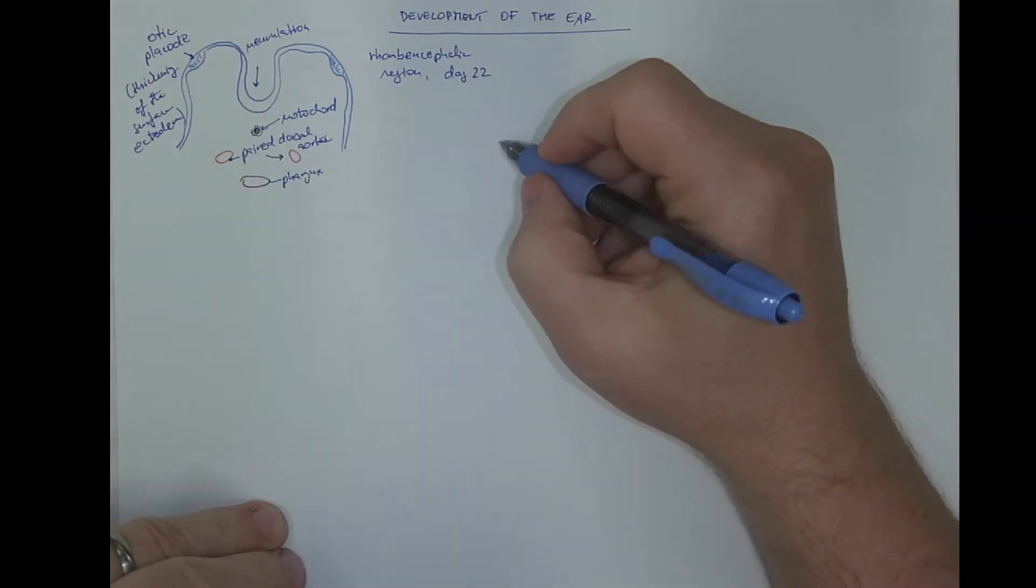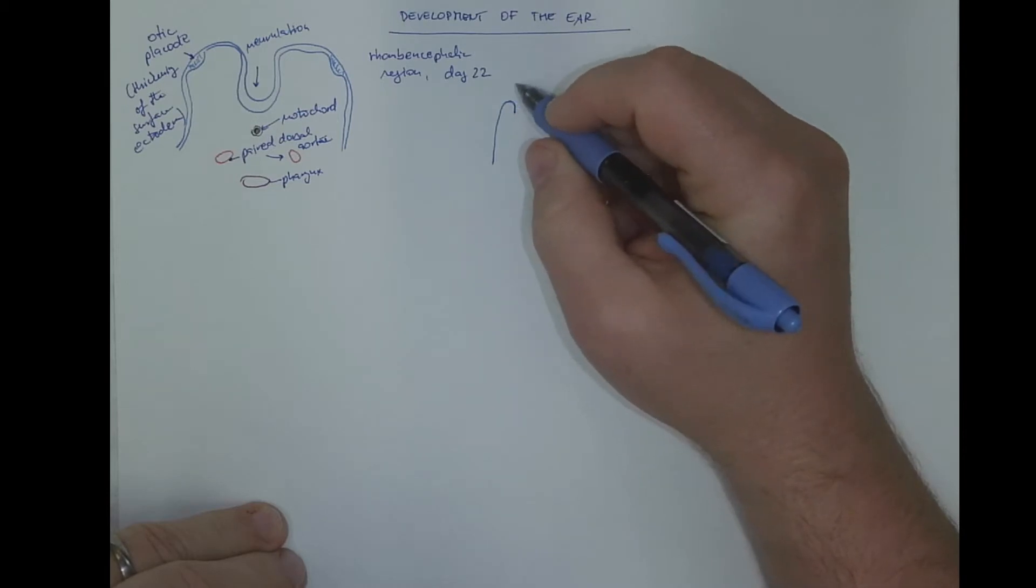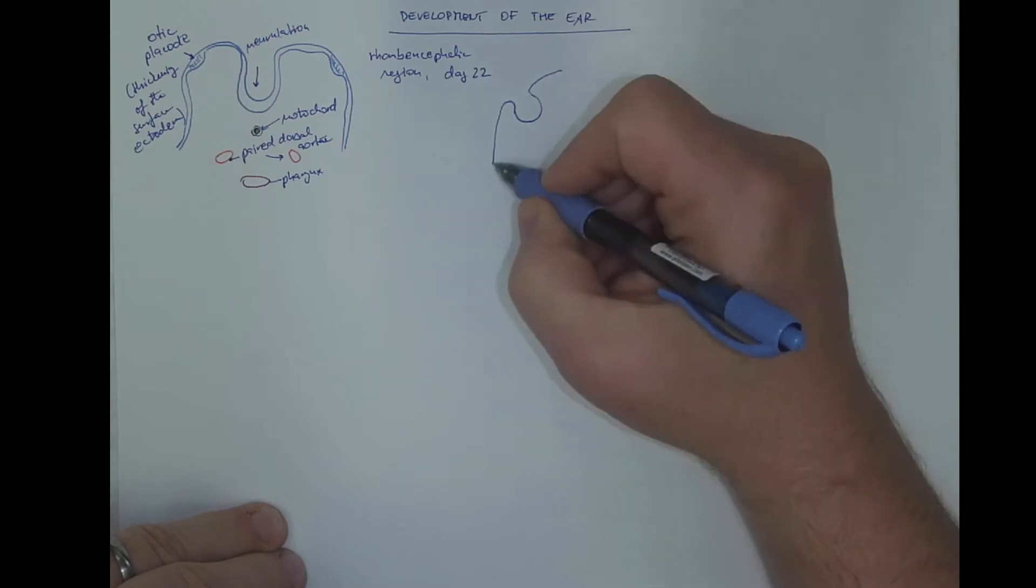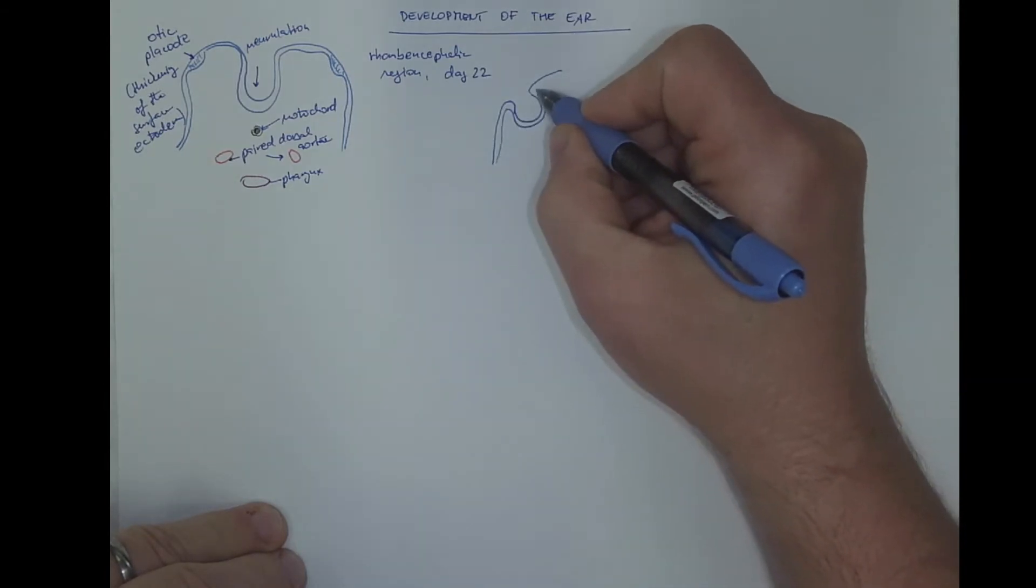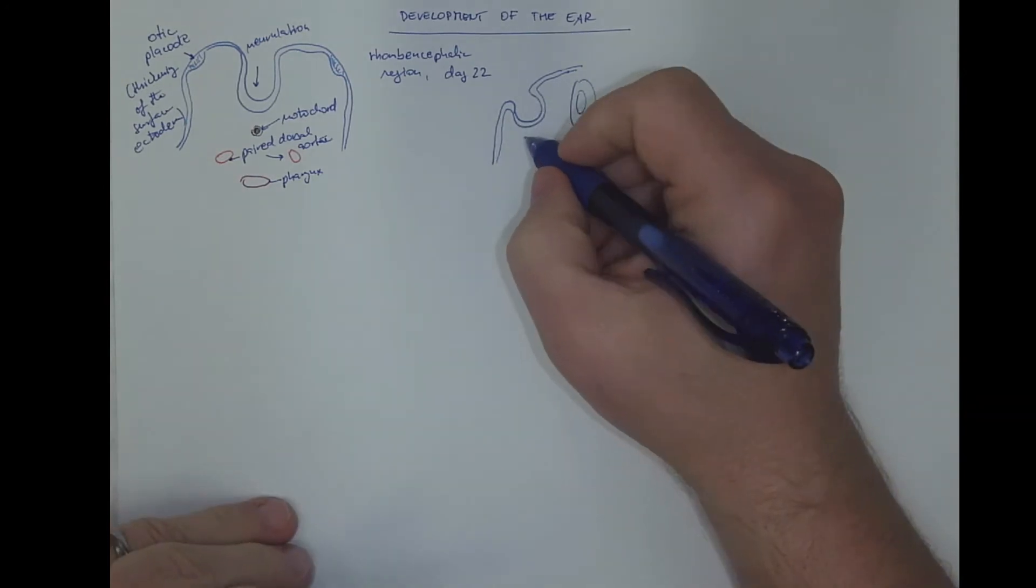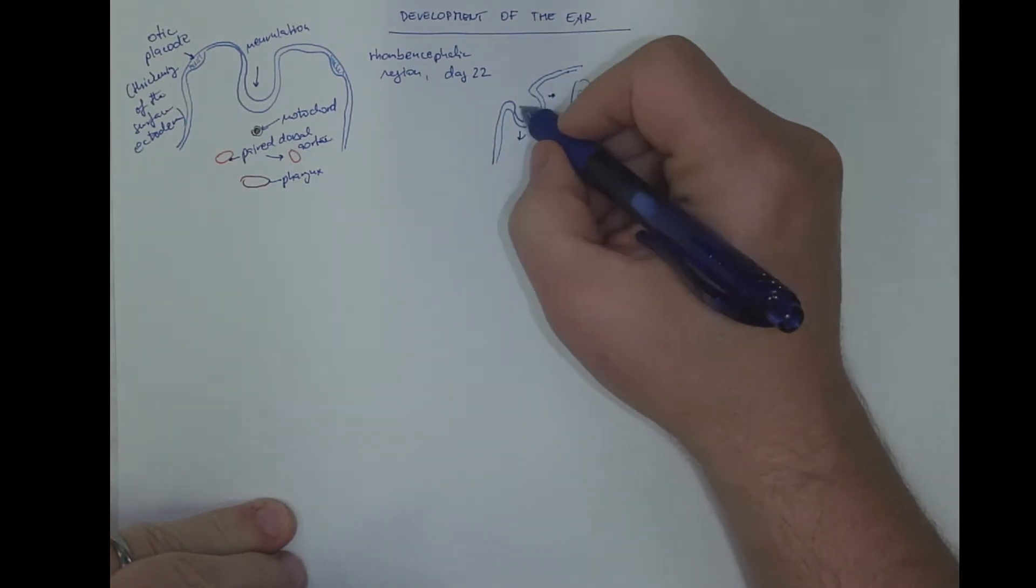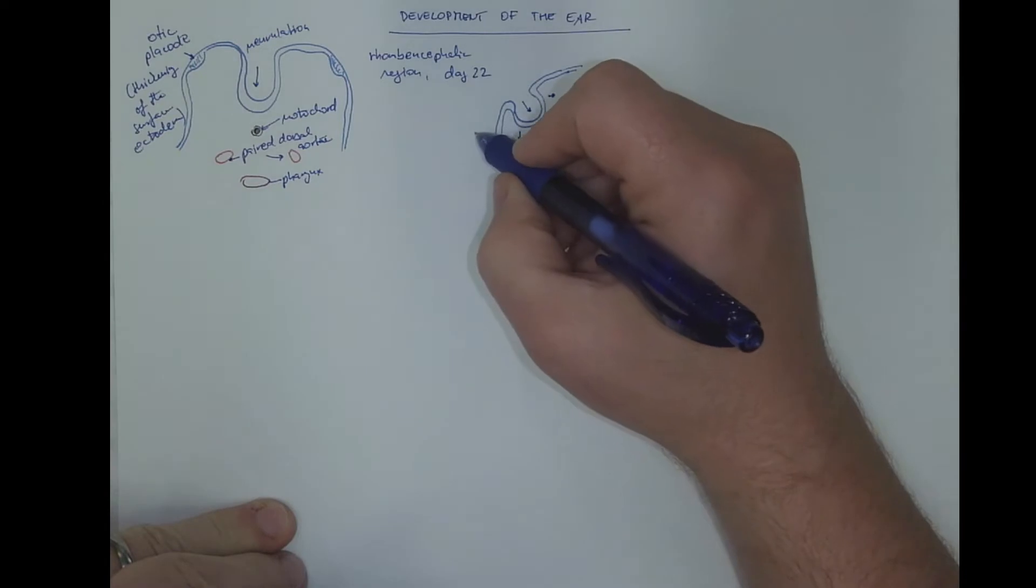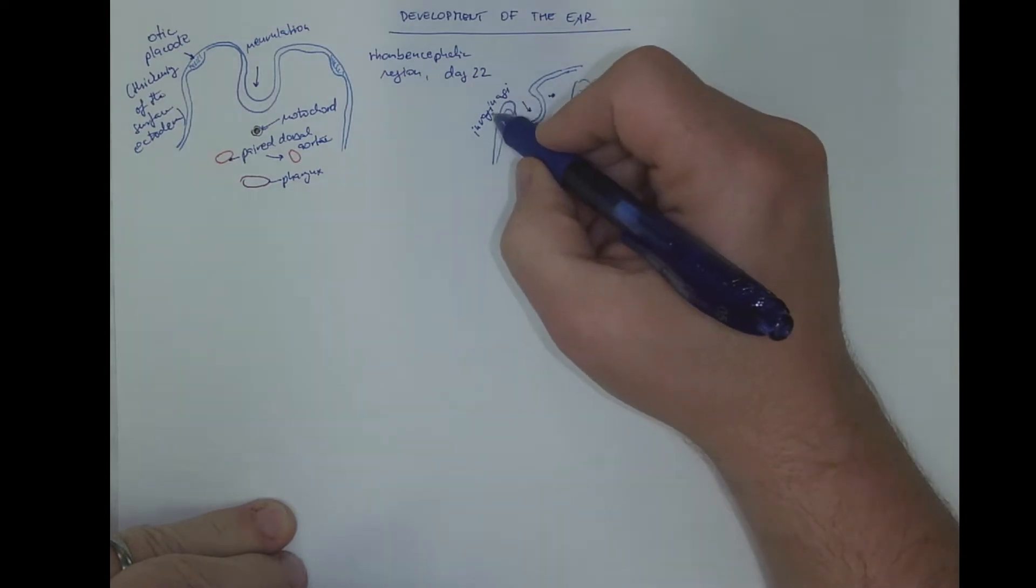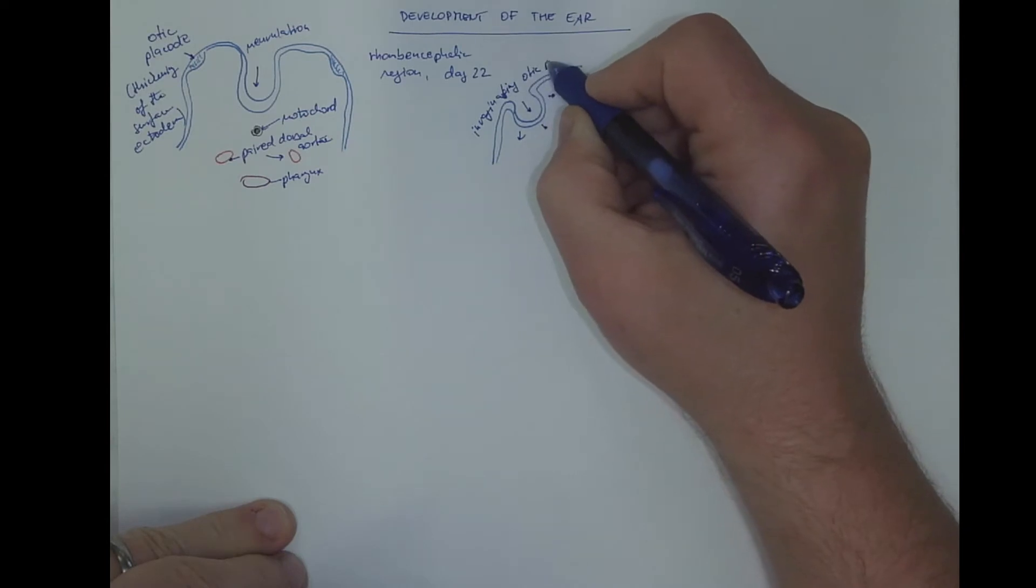The placode invaginates, so it will become a pit. So after the neurulation is completed, this is the invaginating otic pit.